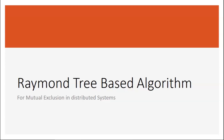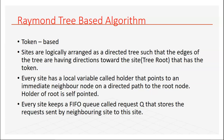We are going to talk about another token-based mutual exclusion algorithm called the Raymond tree-based algorithm. In the earlier class, we discussed the Suzuki-Kasami algorithm and illustrated with an example how that algorithm works. Now it is time to see how the Raymond tree-based algorithm works. There are a few general points about this algorithm and its logic.